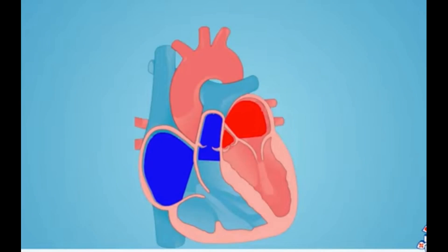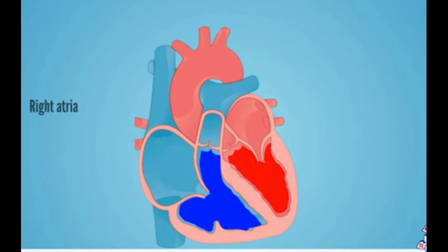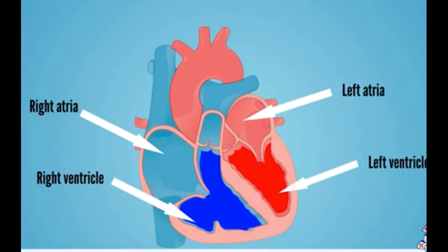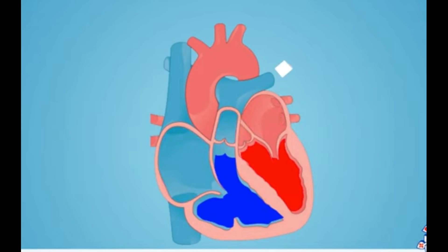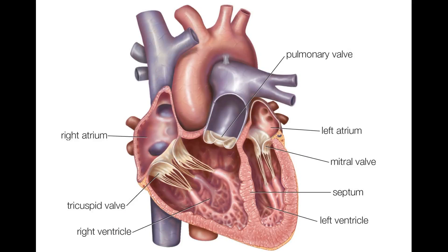The heart cycle consists of two basic steps: Cardiac Diastole means the relaxation of heart muscles, and Cardiac Systole means contraction of heart muscles. Blood has to come from the superior and inferior vena cava to the right atrium, go down to the ventricle, then to the pulmonary artery to be oxygenated from the lungs, and come back from the pulmonary vein to the left atrium, then down to the left ventricle to be distributed in the body by the aorta.